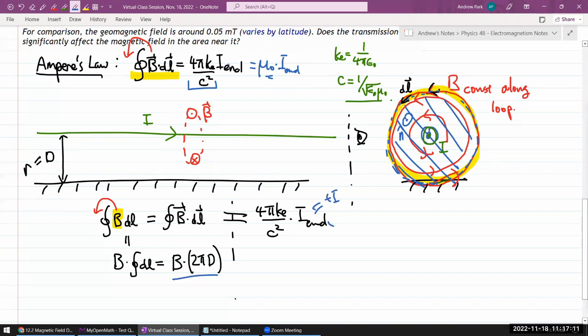I can equate this left-hand side to that right-hand side. I think I have everything I need to solve for the magnetic field. Solving for the magnetic field, I get π is cancelled, 2 cancels a factor of 2 here. Magnetic field is Coulomb constant times 2 times I enclosed divided by C squared times D. Let me plug in the numbers and see what I get.